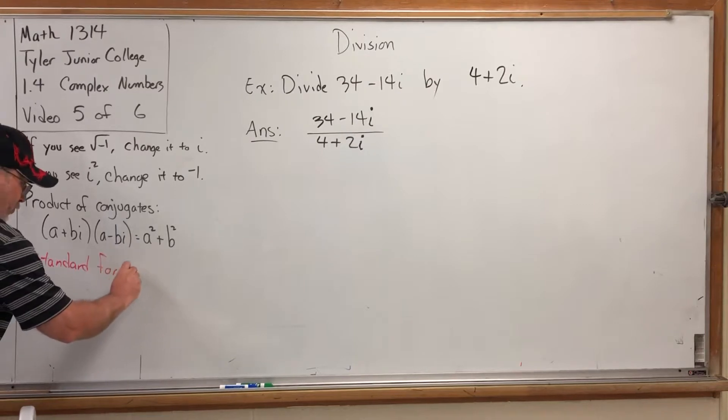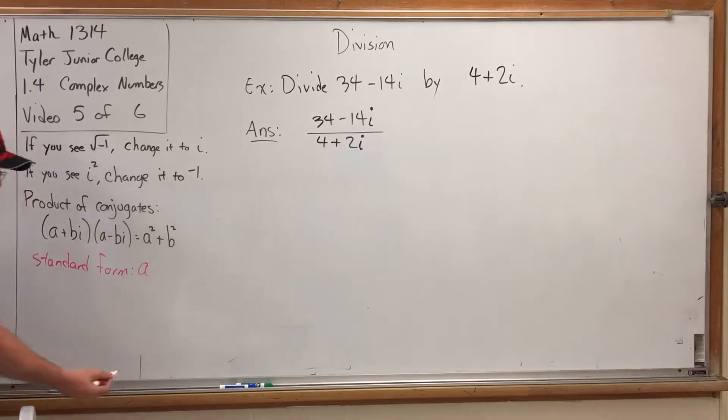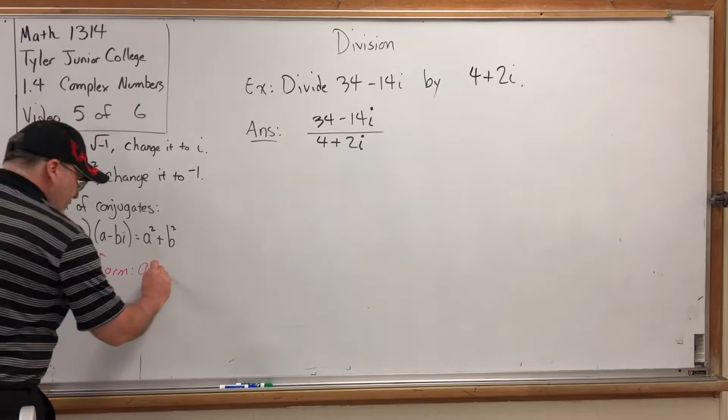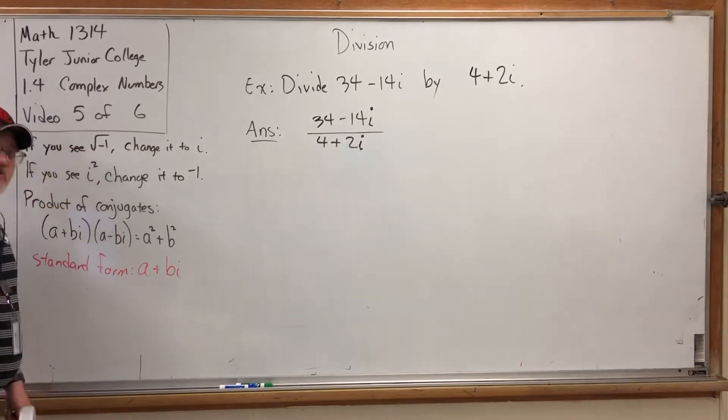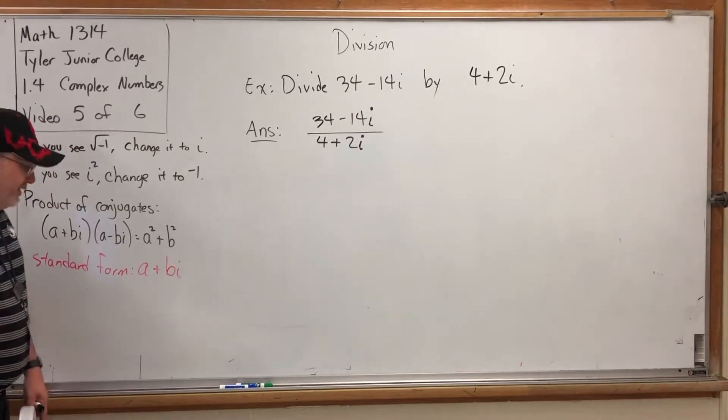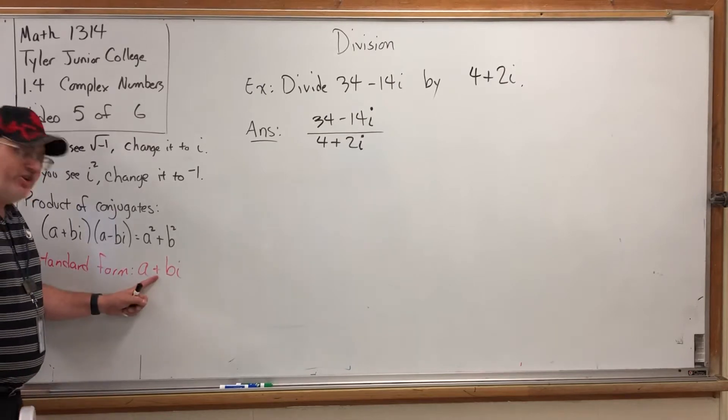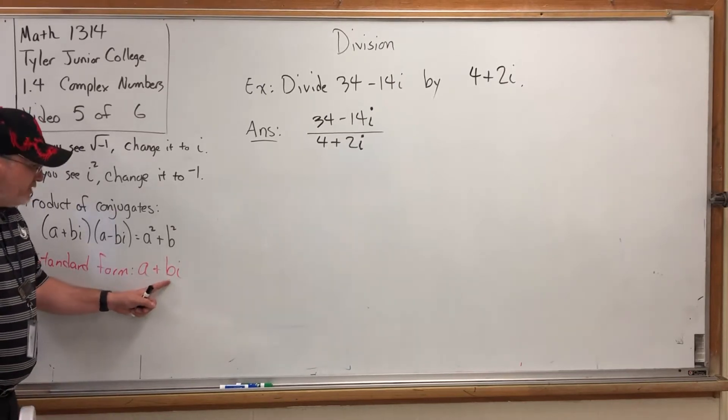Something real, which we generically call a, plus something imaginary, which we generically call bi. And it is worth mentioning that this plus could be a minus because b is allowed to be any real number, and if it were negative then this would actually be a subtraction problem.